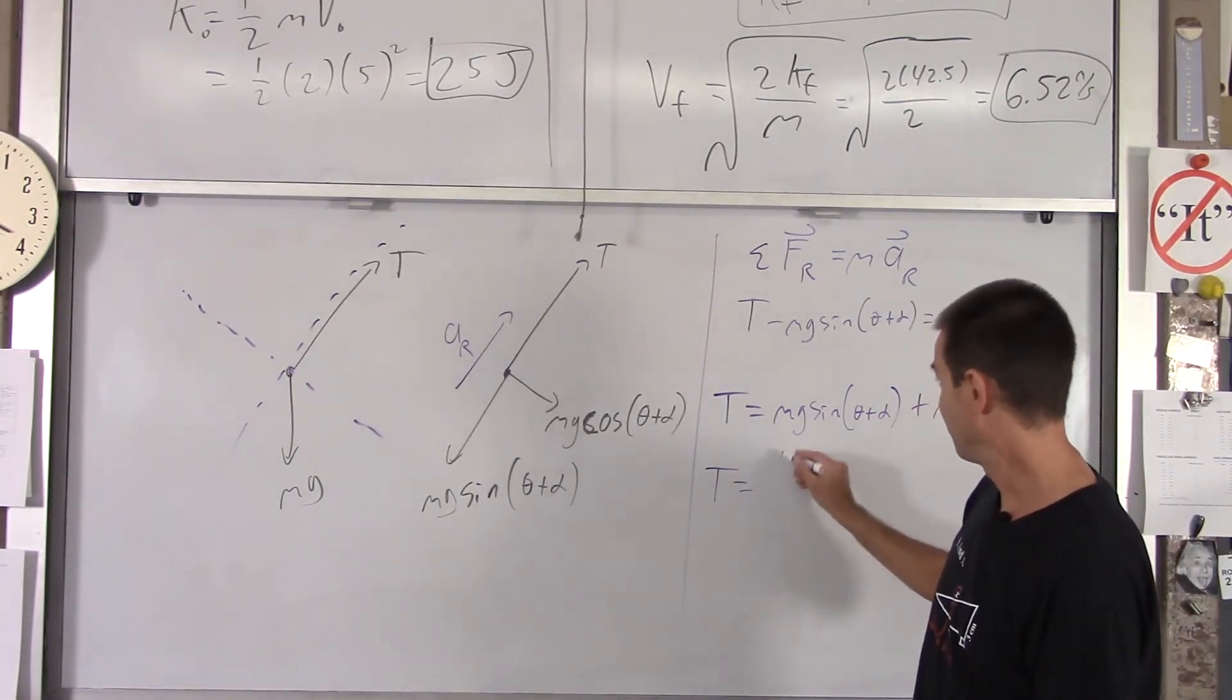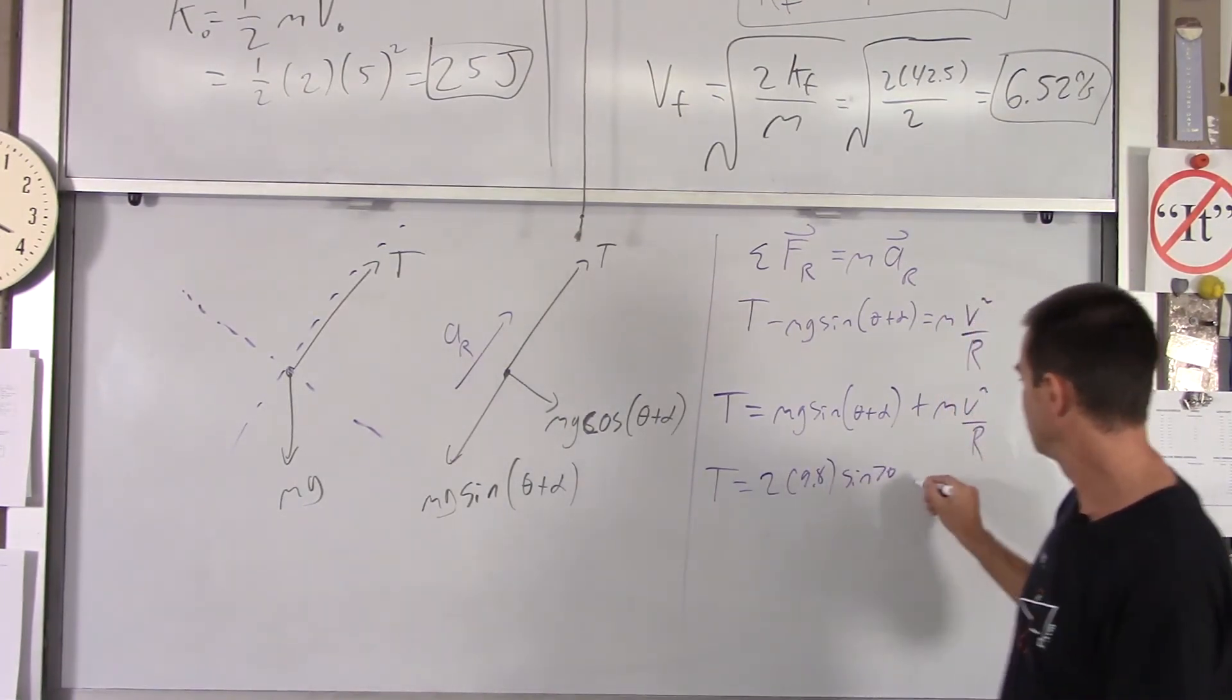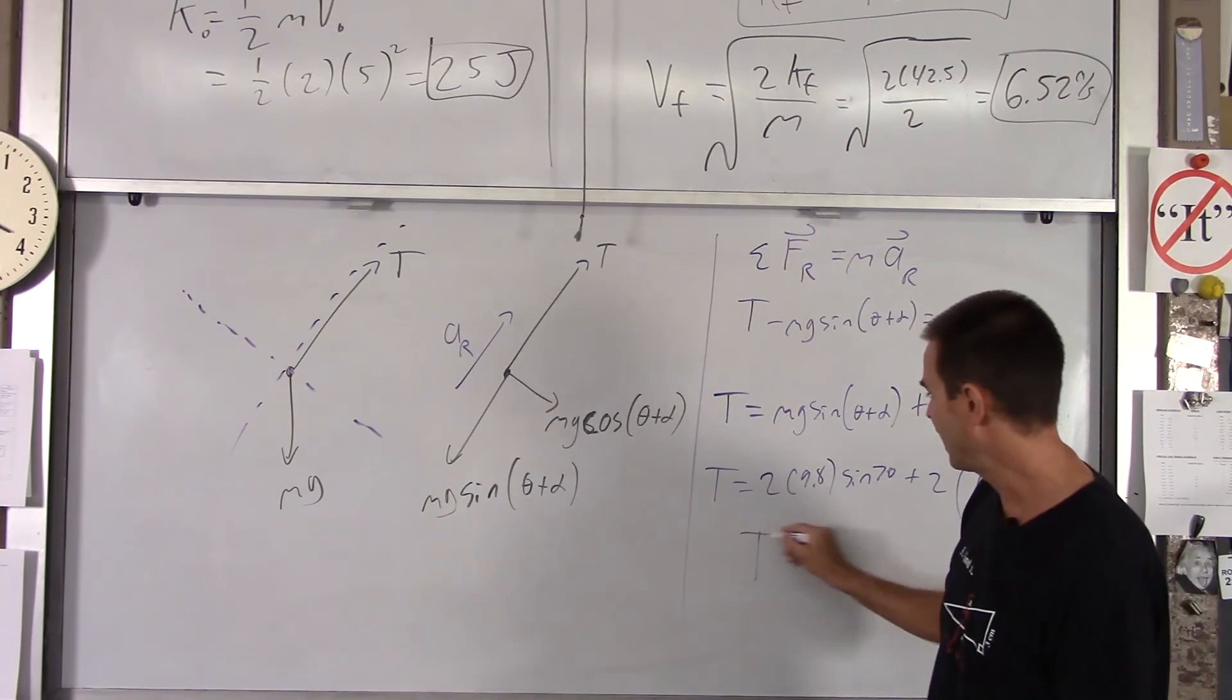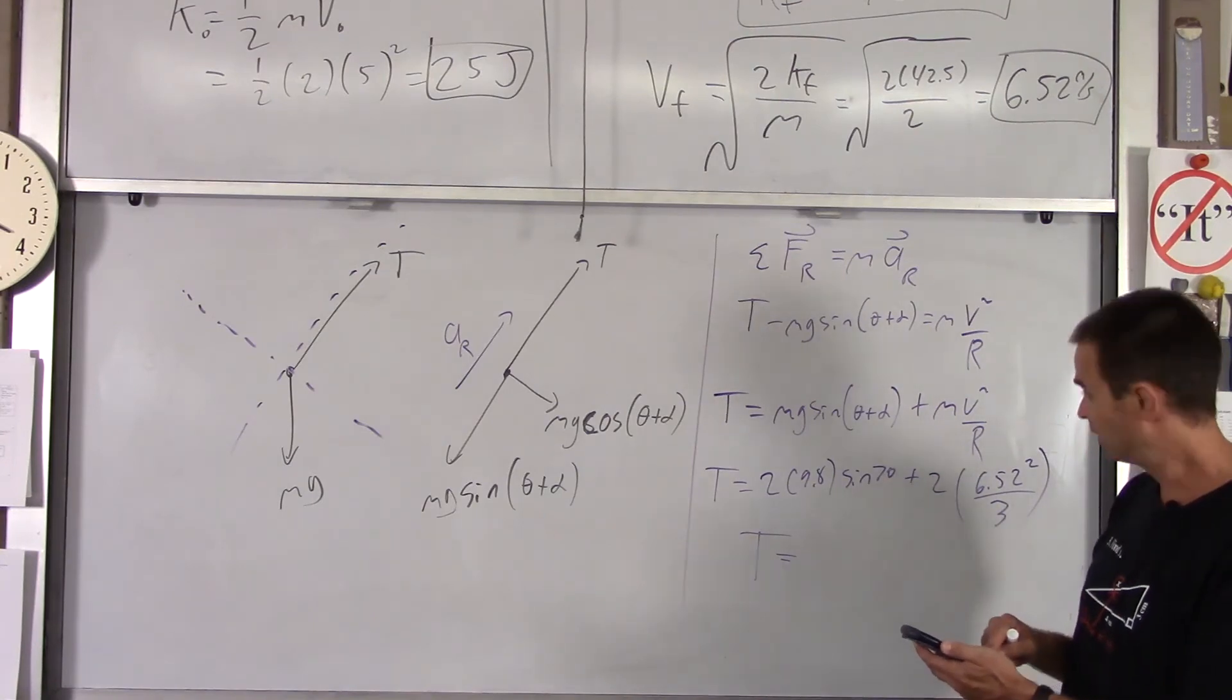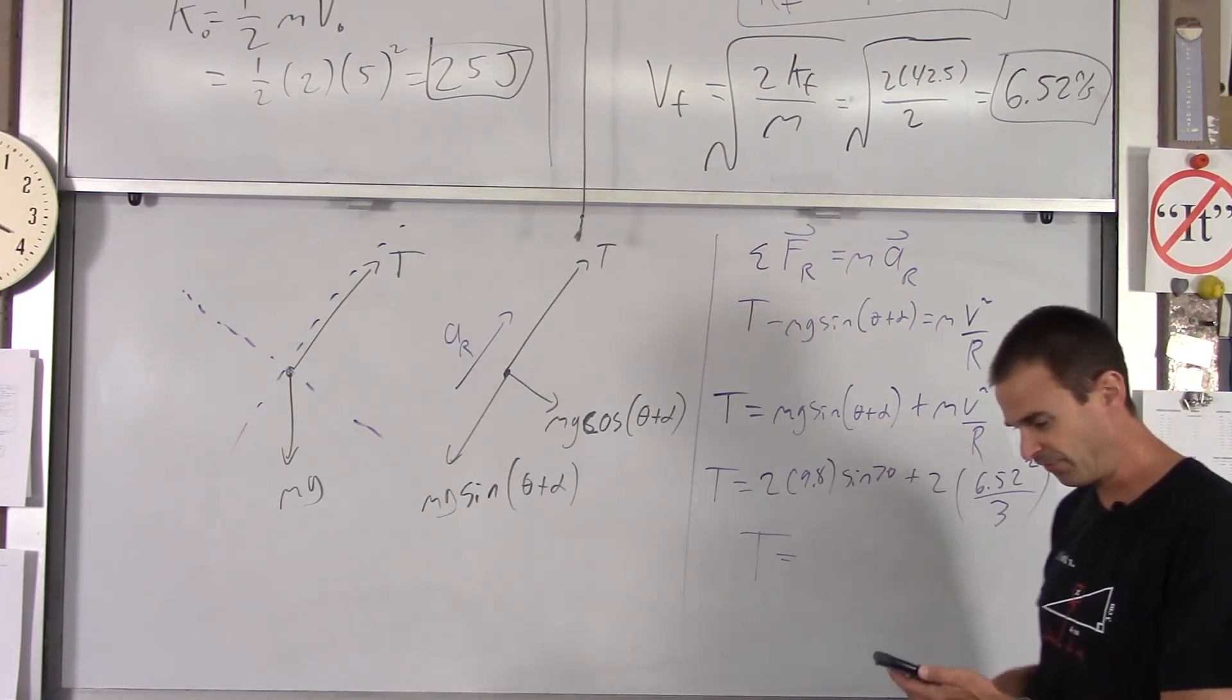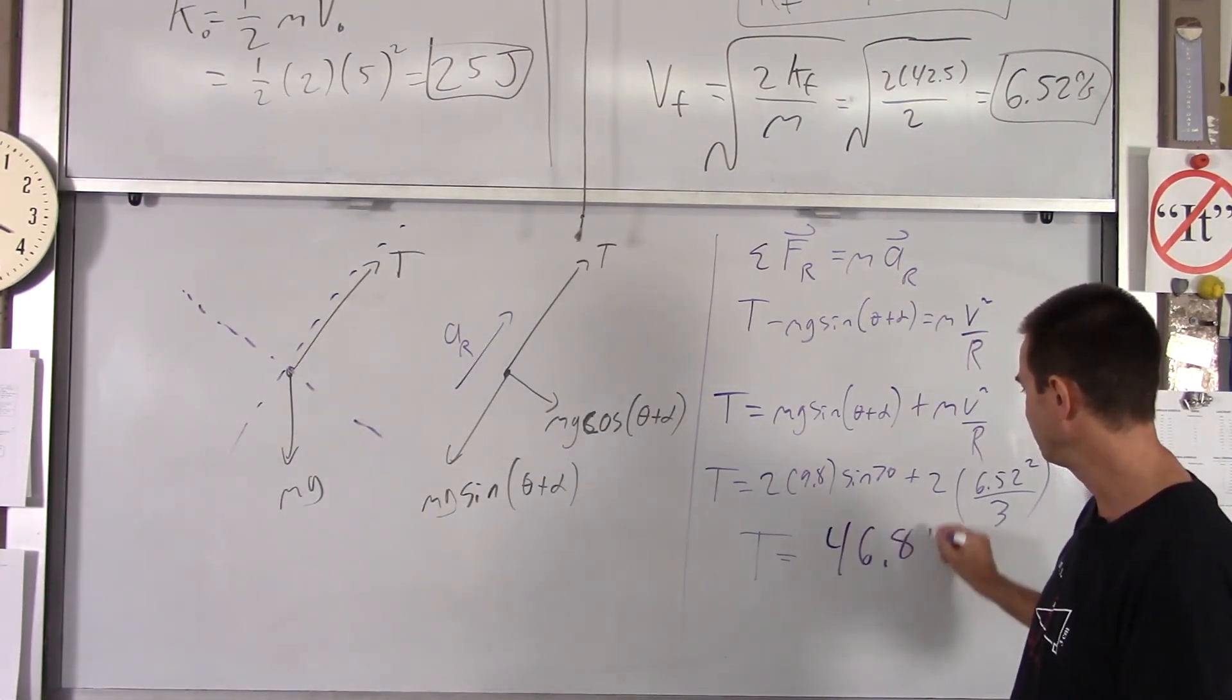And we can plug numbers in. Mass was 2. G is 9.8. We've got sine of 70 plus 2 times V squared, which is 6.52 squared over the radius, which is 3. And that will give us our tension. All right, we'll plug and chug. You want to check to make sure you can do this. All right, 2 times 9.8 sine 70 plus 2 times 6.52 squared over 3. And you get 46.8. So your tension is 46.8 newtons.